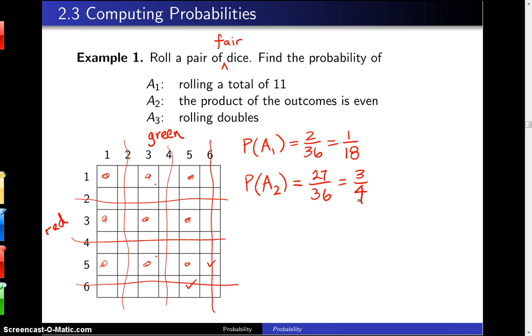And finally, the last one is the probability of rolling doubles, and that's event A3.